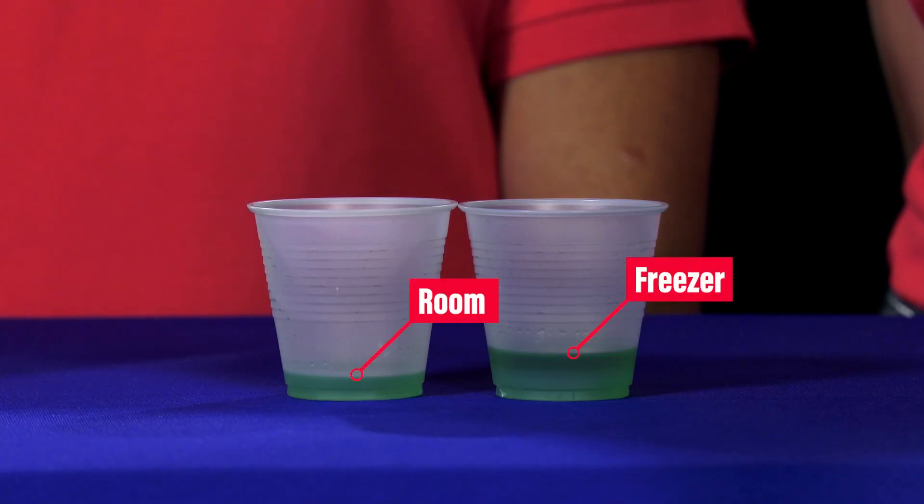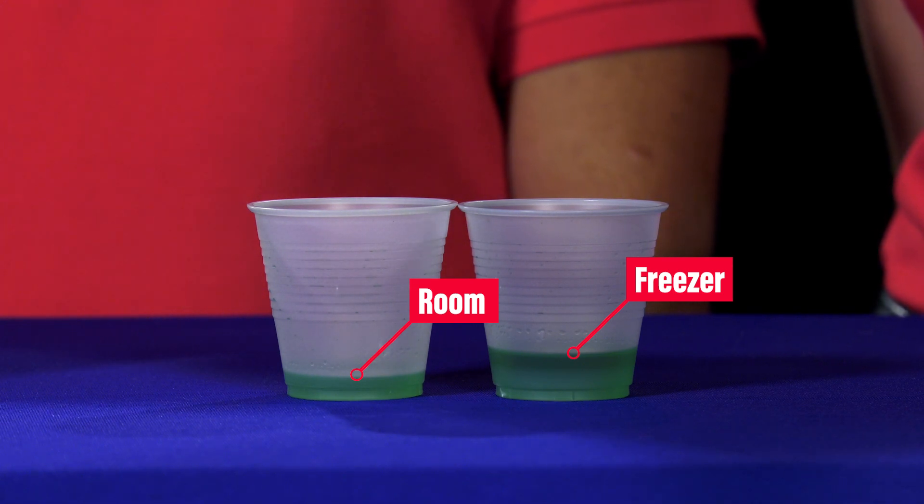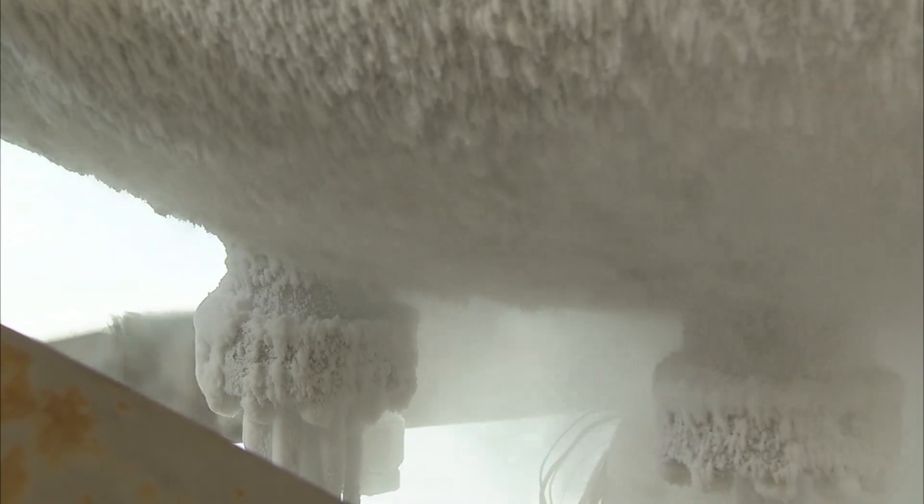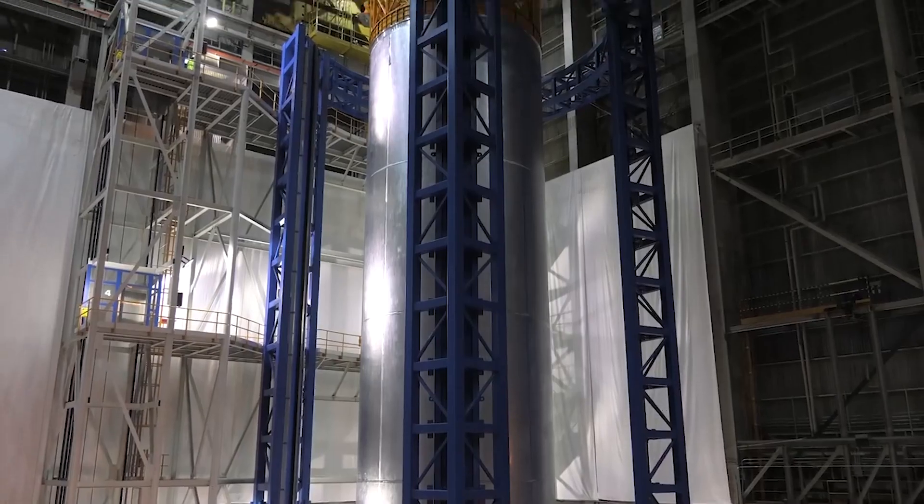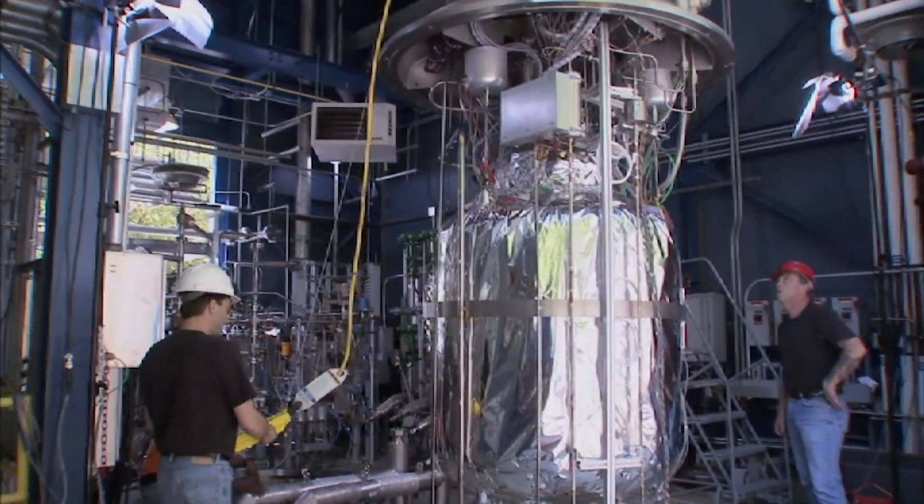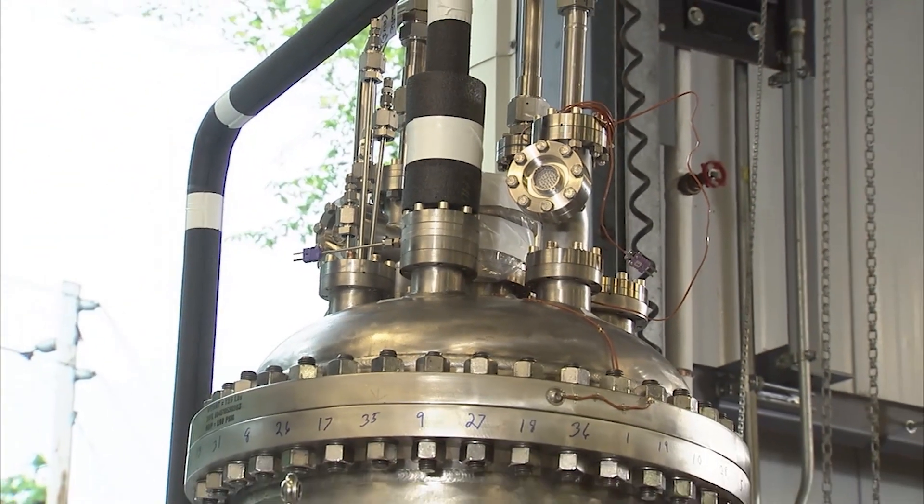The next day, measure and compare how much liquid is left in each and measure the temperature. This will demonstrate how evaporation and temperature are related. Once you understand the relationship between temperature, evaporation, and the use of cryogenic fuel for NASA, it's time to design and build your cold storage container and transfer system.